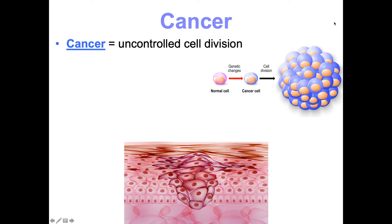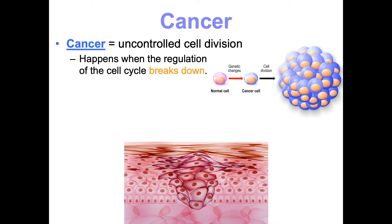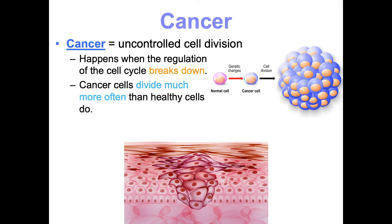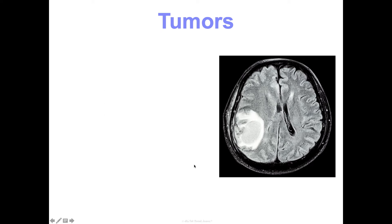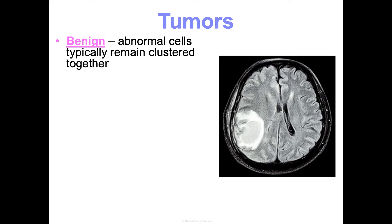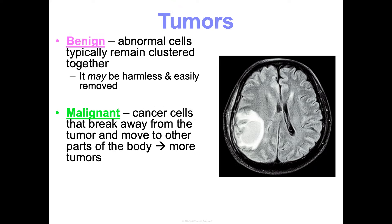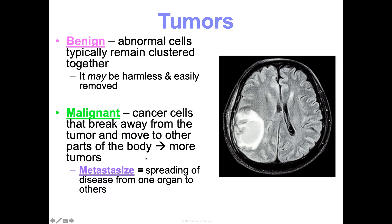Cancer is uncontrolled cell division — when regulation of the cell cycle breaks down and cancer cells divide much more often than healthy cells. Checkpoints fail or regulatory proteins malfunction; changes to the DNA controlling internal regulation turn cells into cancer cells that divide uncontrollably. This can lead to the formation of tumors — clumps of cells that divide uncontrollably and build up. Tumors can be benign, where abnormal cells stay clustered together, or malignant, where cancer cells break away and spread to other parts of the body. That spreading is called metastasis.